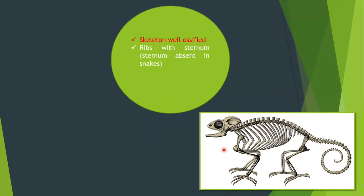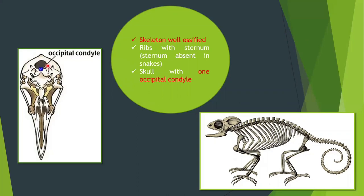The skeleton is well ossified. Ribs attach to the sternum for muscle attachment, but the sternum is absent in snakes. The skull has one occipital condyle — a structure behind the skull to which the first atlas vertebra articulates. As seen in the diagram, there is only one occipital condyle in reptiles.